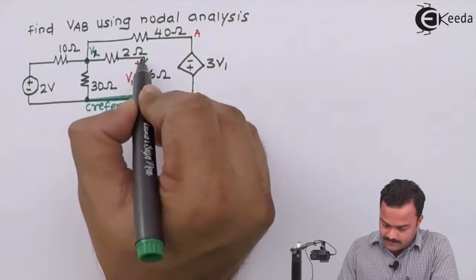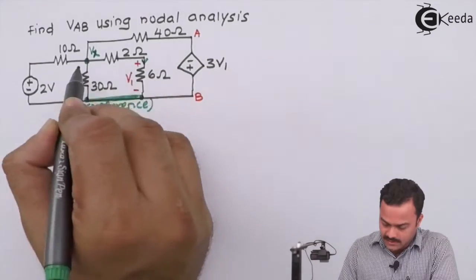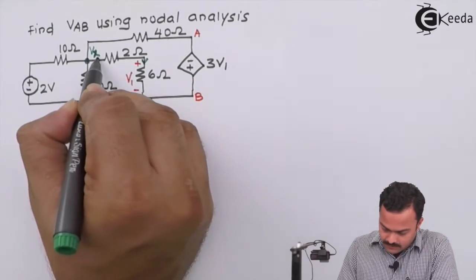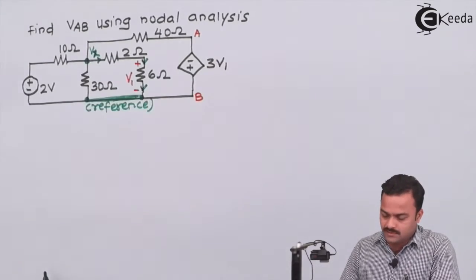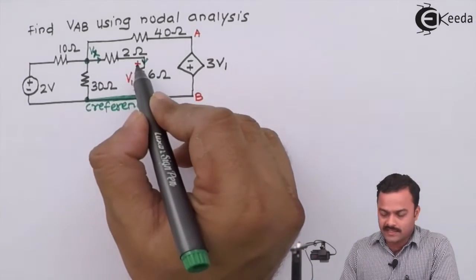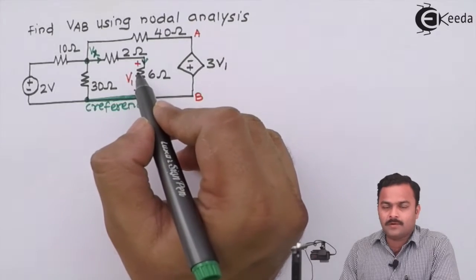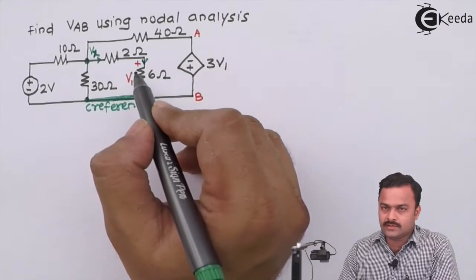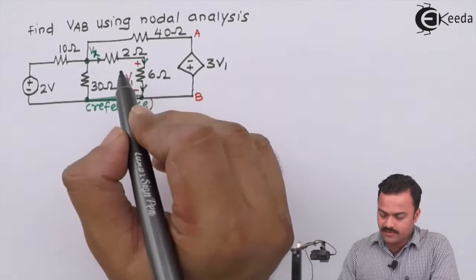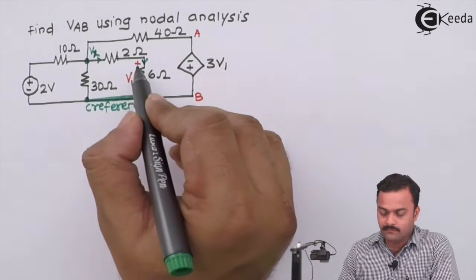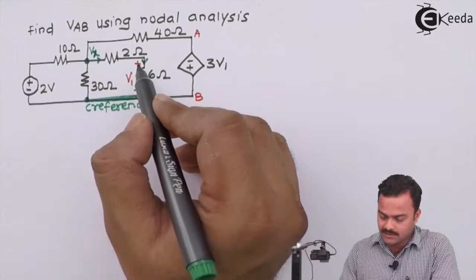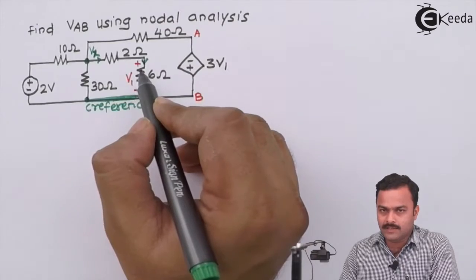So for this complete branch, the current will be in this manner. This is very, very important. If you change the current direction, the entire problem will go wrong. So it is very essential whenever there is a voltage given across any of the resistor, we have to mark the current such a way that polarity will be maintained.